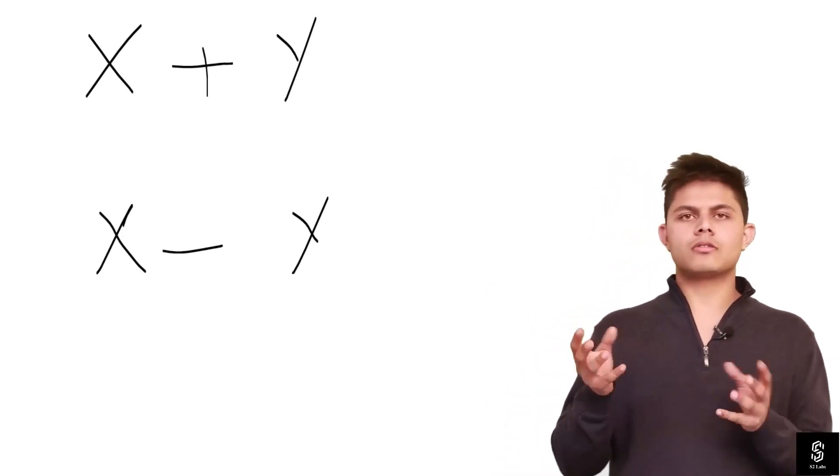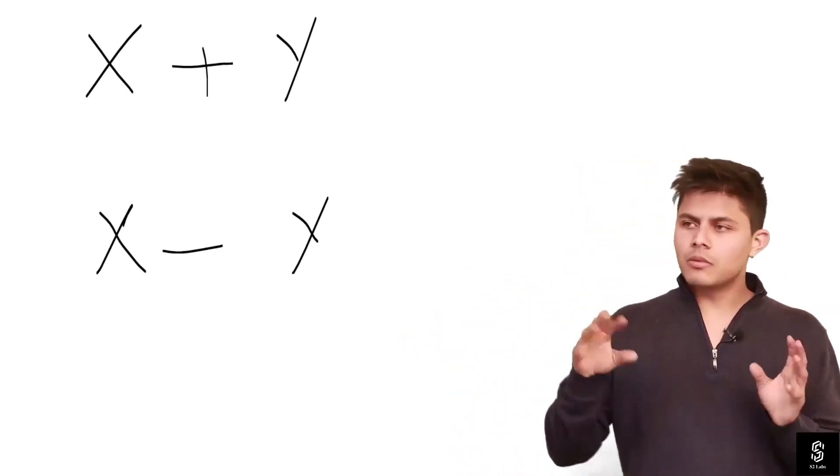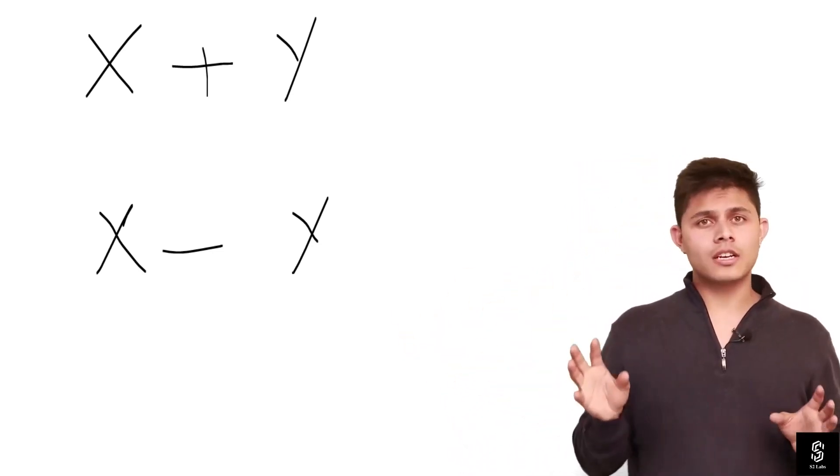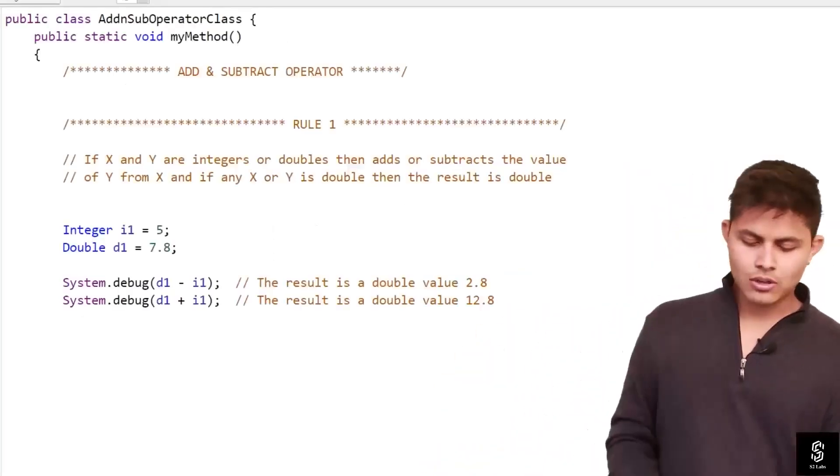If one value is integer and another is double, the output will be double. If both values are double, the output will be double. And if both values are integer, then obviously the output will be integer. This is exactly what rule one is saying.